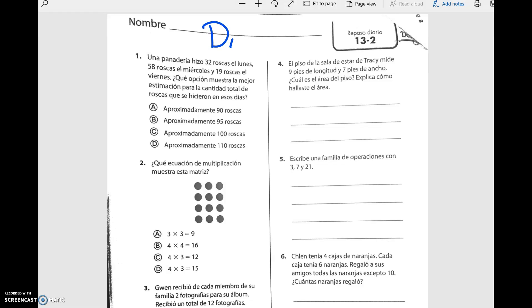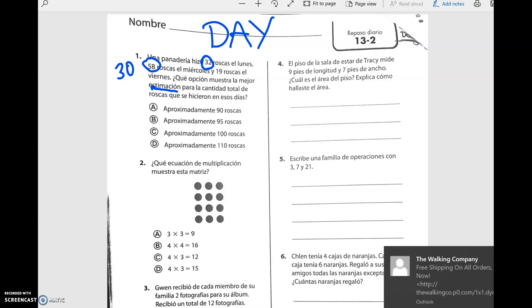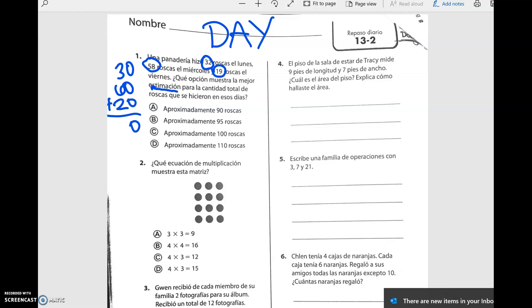Let's hop over to our day two. I'll write day two at the top. Look at our DMR. Day two. Una panadería hizo 32 roscas el lunes, 58 roscas el miércoles y 19 roscas el viernes. ¿Qué opción muestra la mejor estimación para la cantidad total de roscas? Yo veo aquí estimación. We're going to round. 32, closest to 30. 58, cercano a 60. Y 19 es como 20. Si lo sumamos, 0, 9, 10, 11. 110. Perfect.